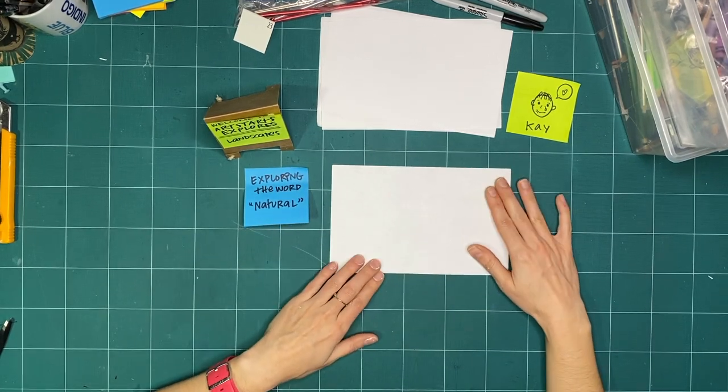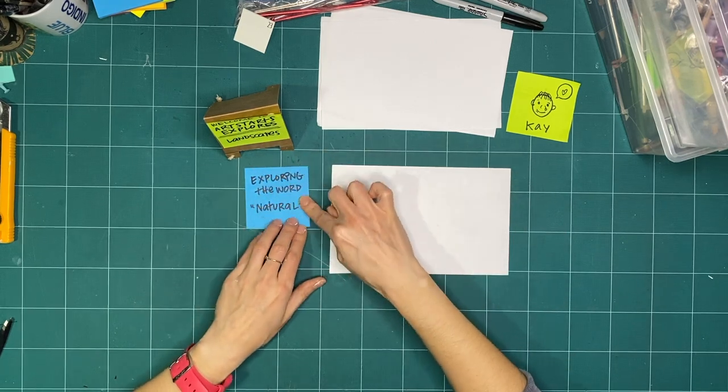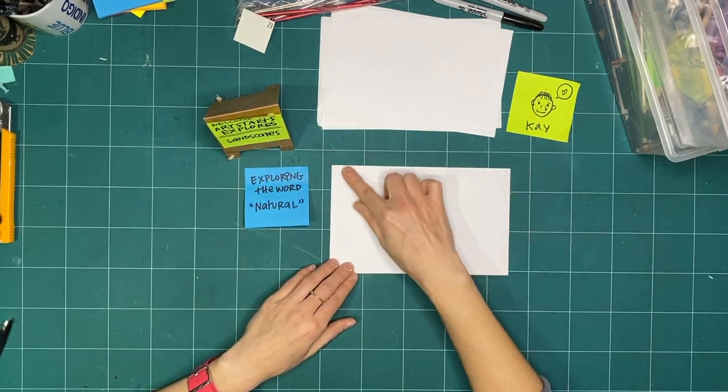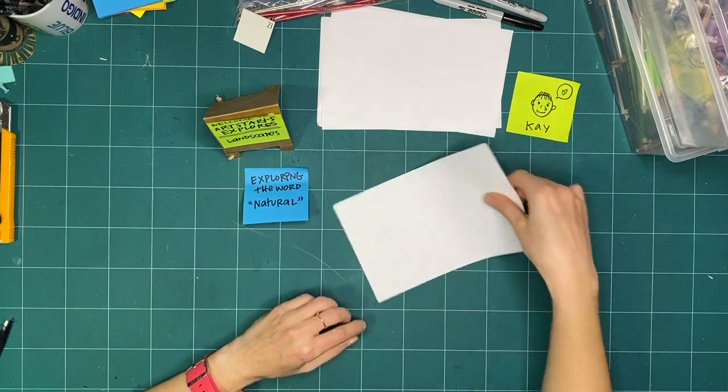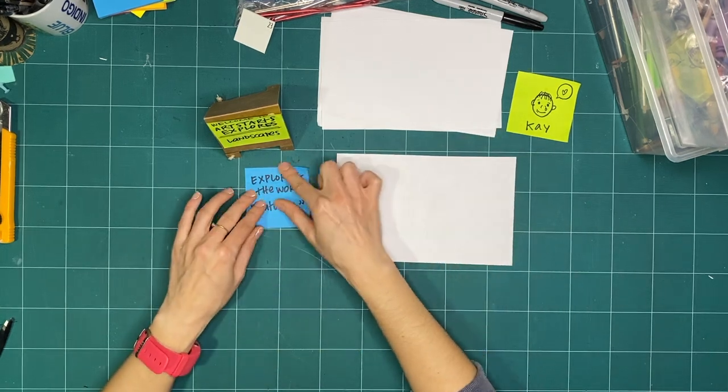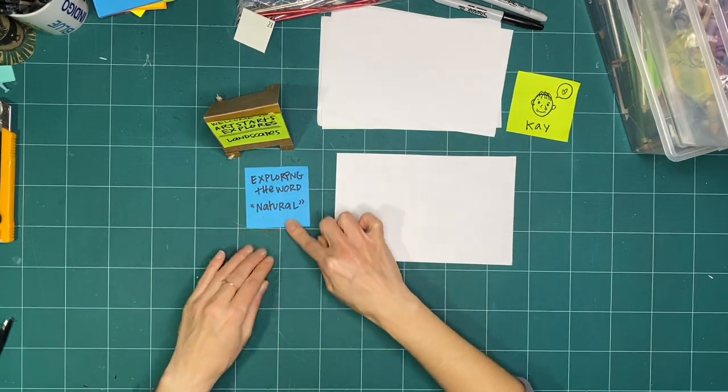So already, we've just explored the word landscape, just as it relates to how we turn the page, we haven't even put anything on the page. What can we put on the page this week while we're exploring the word natural?